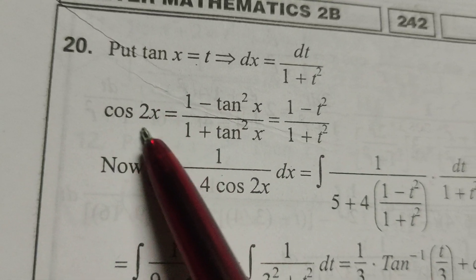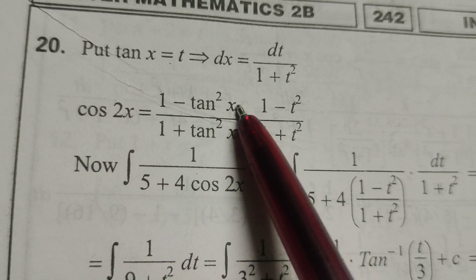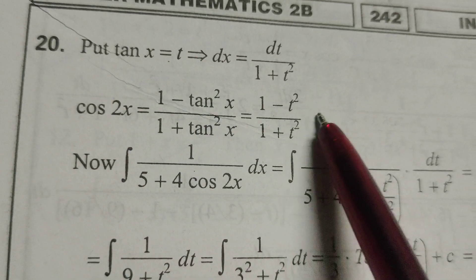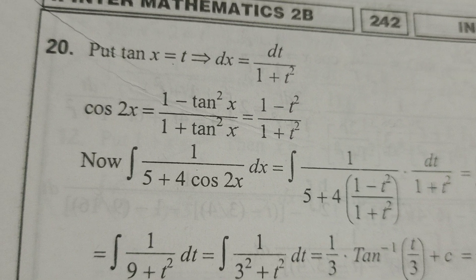What is the formula for cos 2x in terms of tan? 1 minus tan square x by 1 plus tan square x. Therefore, 1 minus t square by 1 plus t square.